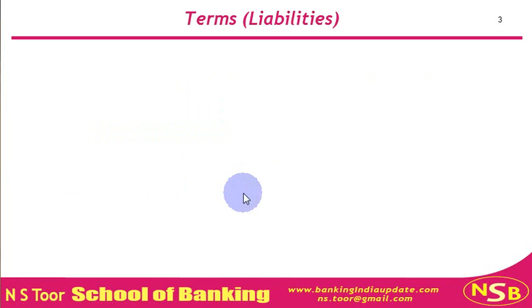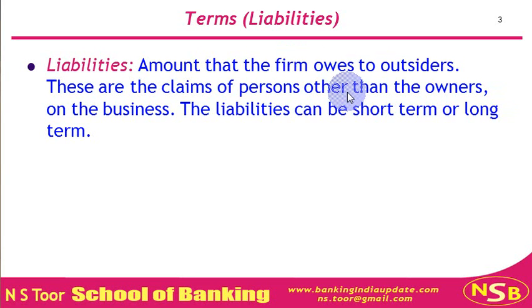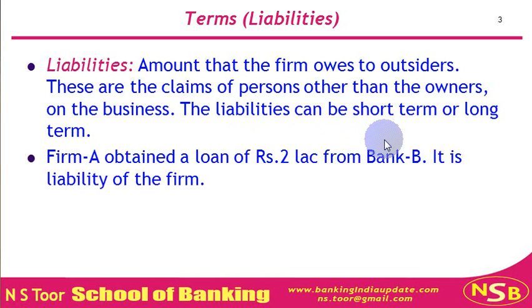Now, what are liabilities? Liability is the amount which a firm owes to outsiders — when some amount is payable by a firm to outsiders, this is called a liability. Liabilities are claims of other persons, meaning persons other than owners. Liabilities can be short-term or long-term — claims of outsiders can be for a short period or a long period.